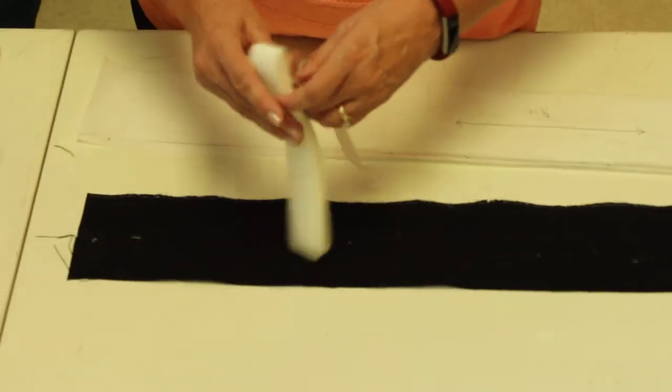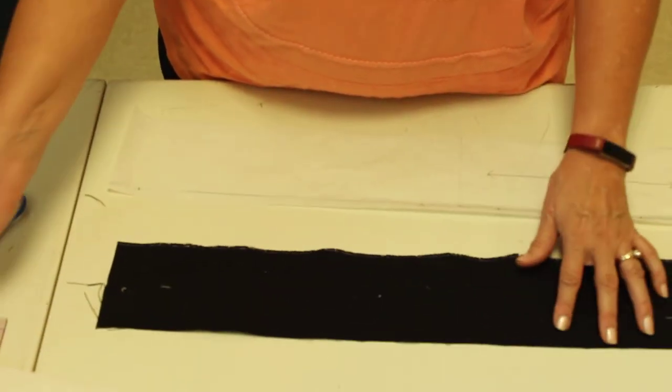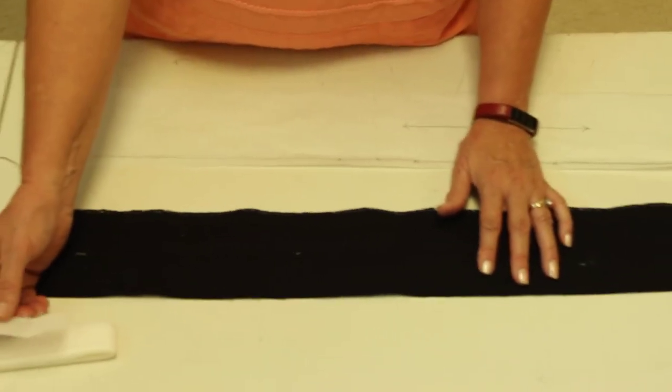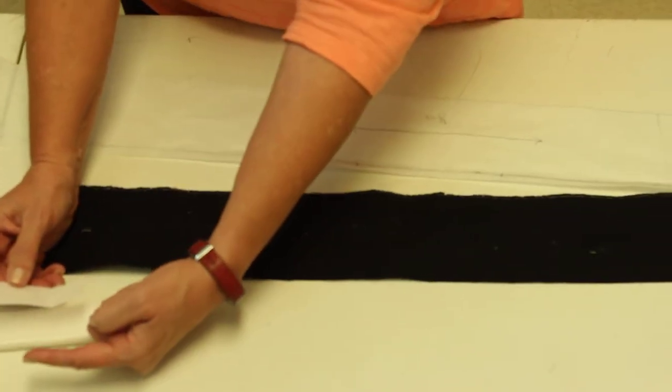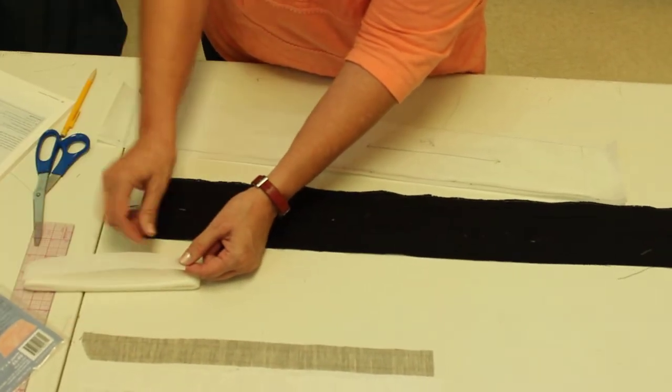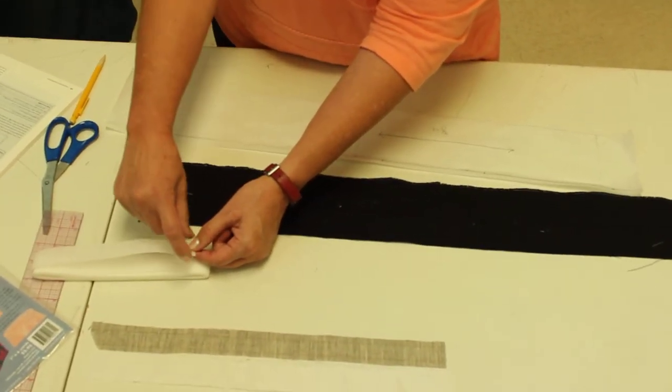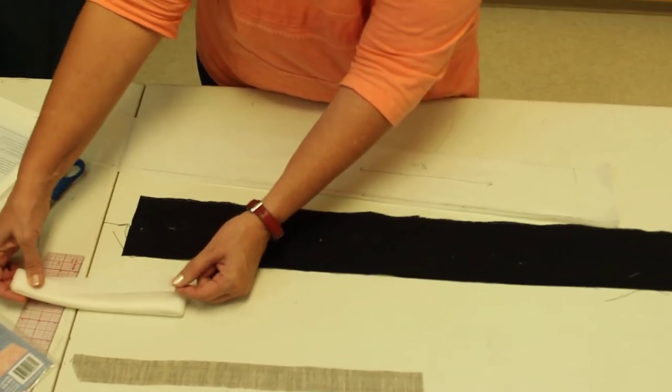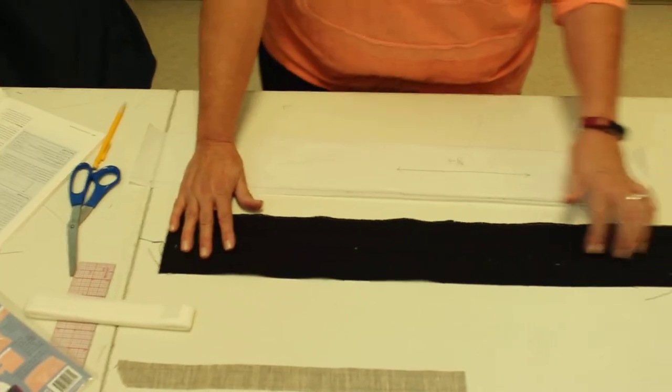But you can buy all sorts of waistband fabrics, I mean waistband interfacing. You can also get the kind that's perforated. It kind of has little perforated things here, and it's fusible. You can get the kind, you know, wider. If you get the wider, you can trim it down to what you need. So that's an option. Okay, so that's our sew-ins.